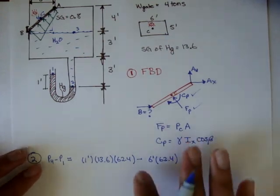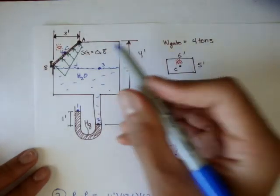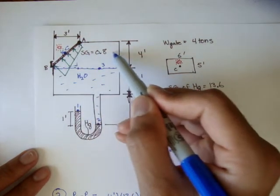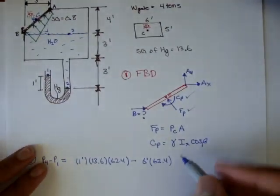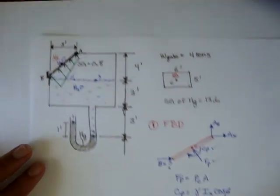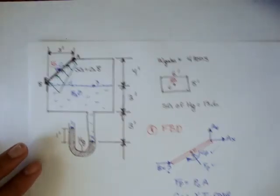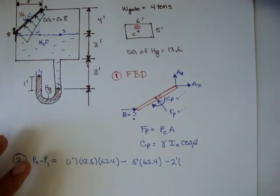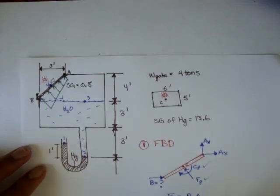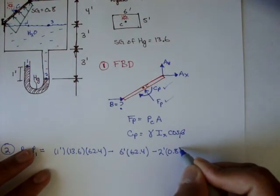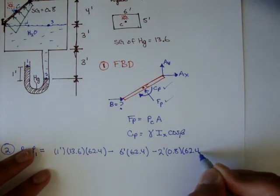And, then, again, from three to four, we're going up two, because that's where the center is located. So, minus two feet, times, the unknown liquid is 0.8. So, remember, a specific gravity times the specific weight of water gives us the specific weight of the liquid. So, it's going to be 0.8 times 62.4.